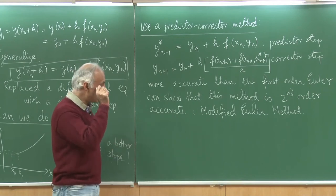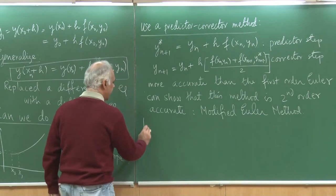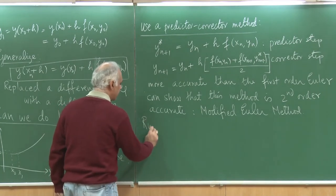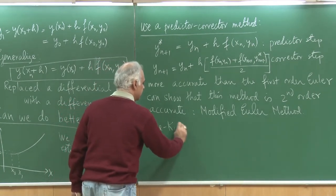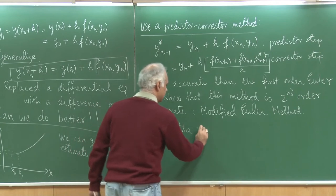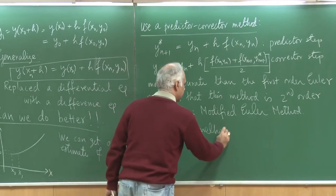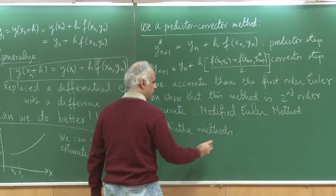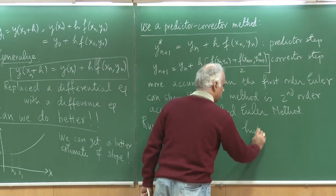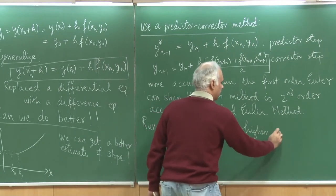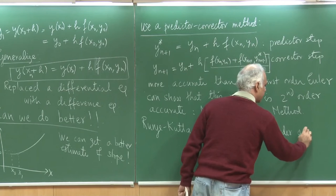Let me show you some examples. We can have a class of methods called the Runge-Kutta methods, which are higher order accurate.